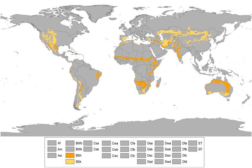A semiarid climate or steppe climate is the climate of a region that receives precipitation below potential evapotranspiration, but not as low as a desert climate. There are different kinds of semiarid climates, depending on variables such as temperature, and they give rise to different biomes.